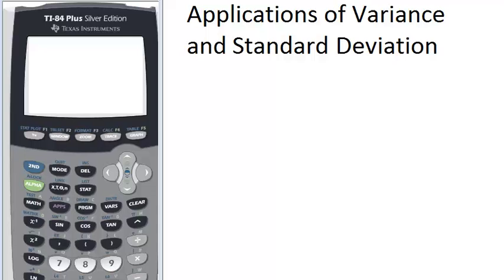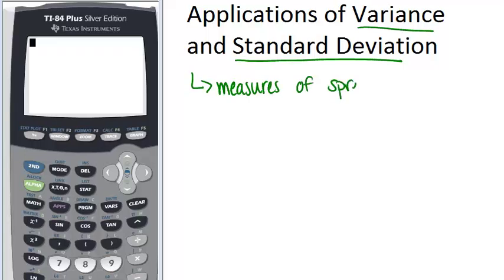First, let's review what variance and standard deviation are. They are both measures of spread, which means they tell you how far apart or how close together the numbers in your data set are.